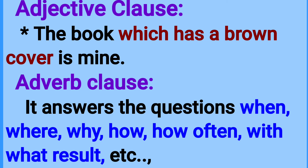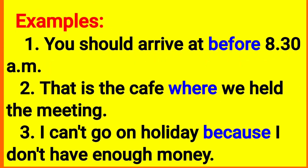For example: 'You should arrive before 8:30 AM.' 'Before 8:30 AM' answers when — it is a time adverb clause. Next: 'That is the cafe where he held the meeting.' 'Where' answers the question of place — 'where we held the meeting' is the adverb clause of place.